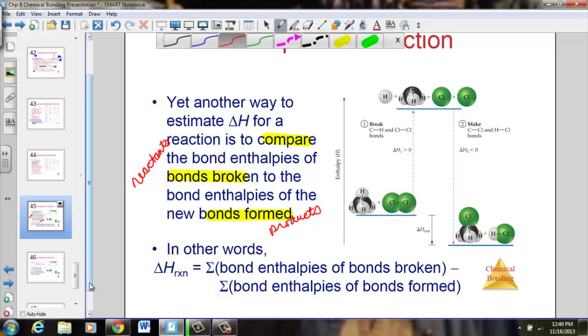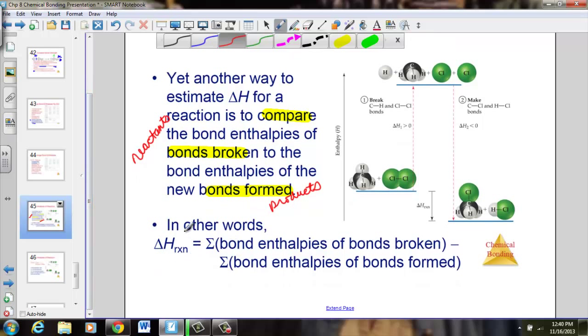In other words, we have an equation to help us find delta H of reaction: kilojoules of energy needed to predict whether this reaction is overall endothermic or exothermic. The bond enthalpies of broken bonds—breaking bonds is reactants—minus the bond enthalpies of bonds formed. Products. Reactants minus products.